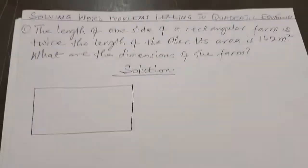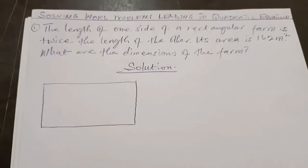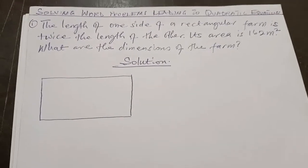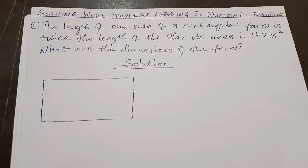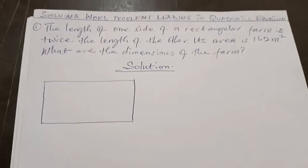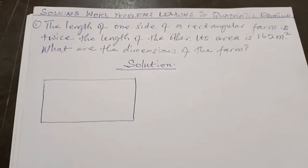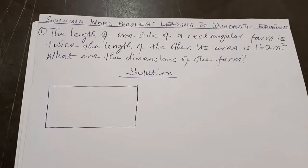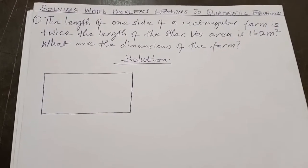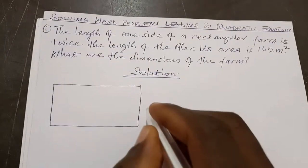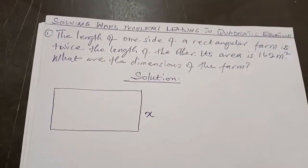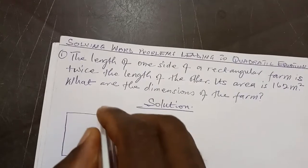The rectangular farm means that the farm looks like a rectangle. The length of one side of the farm is twice the length of the other, so we are talking about two sides with a relationship between them. One side is shorter and the other side is longer. If the shorter side is X, then twice that side is going to be 2X.